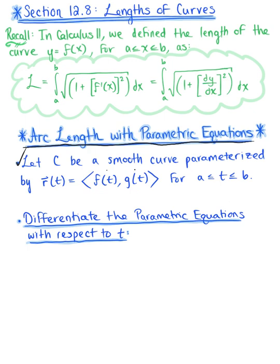In order to derive the arc length formula for our parametrized curve, we need to define the parametric representations of the x and y coordinates, and then differentiate them with respect to our arbitrary parameter t. Looking at our vector-valued function, the parametric equation for x is f(t), and the parametric equation for y is g(t). So we have x = f(t) and y = g(t).